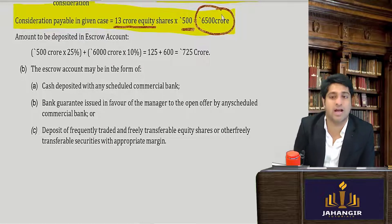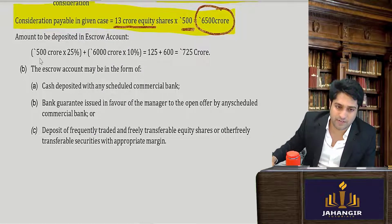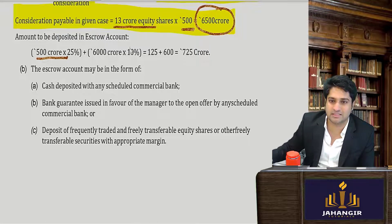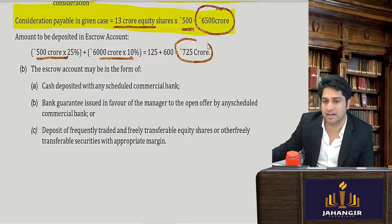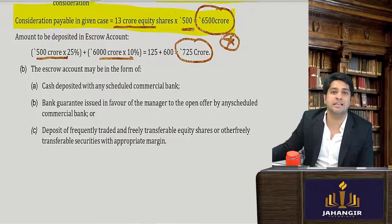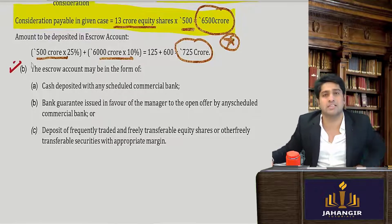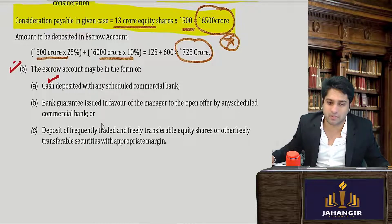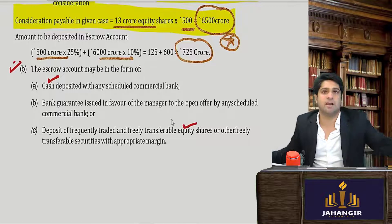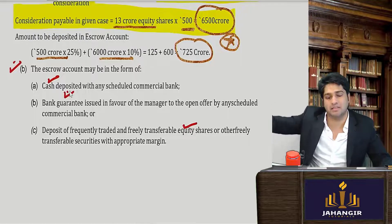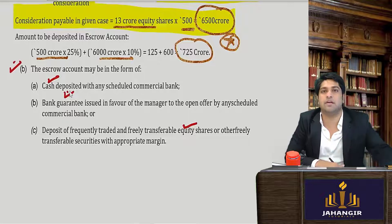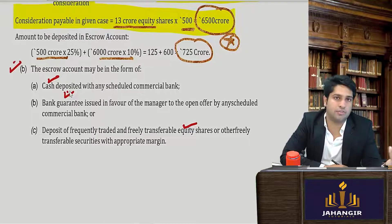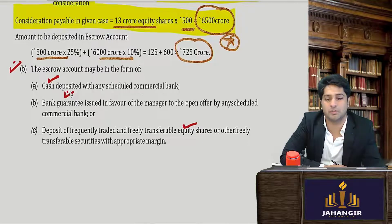Now, how much should be in the escrow account? For the first 500 crores — 25%. For the balance, that is 6,000 crores — 10%. Adding these up gives 725 crores. In the escrow account, the acquirer does not always have to deposit cash. He can deposit cash equivalents, pledge his shares, or obtain a bank guarantee — where the bank guarantees that if he doesn't pay, they will pay. Or a combination of all of these forms is also acceptable.